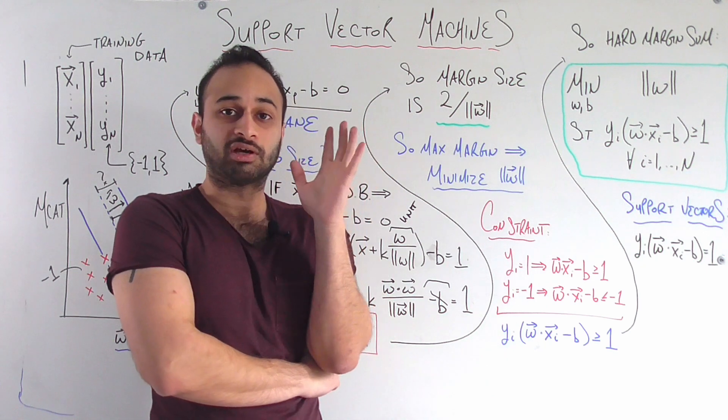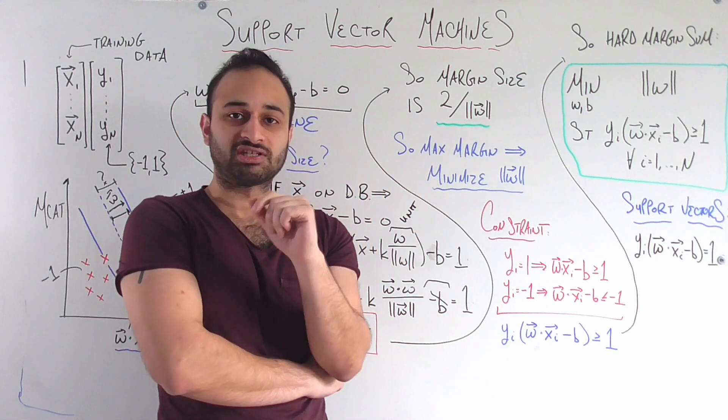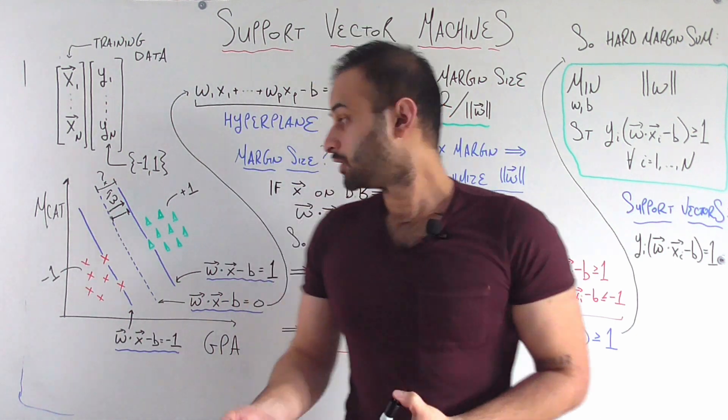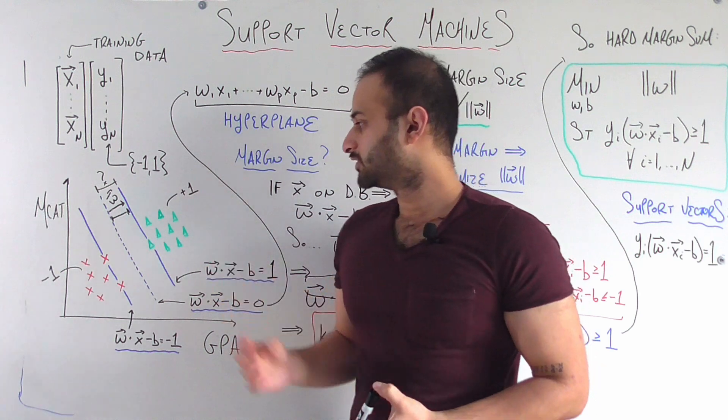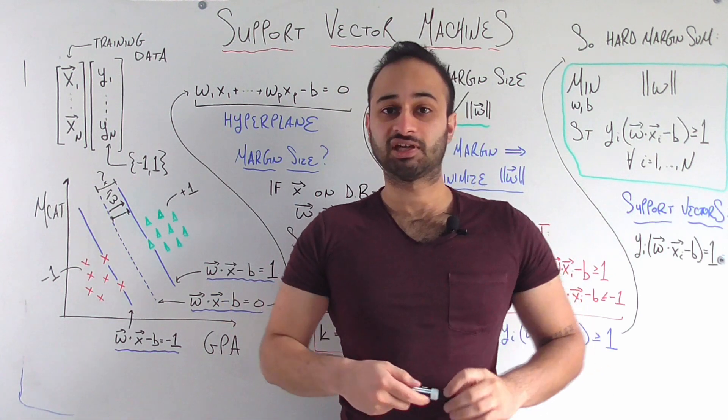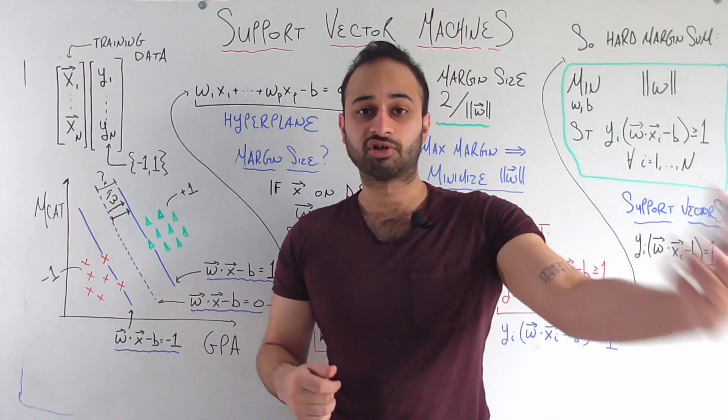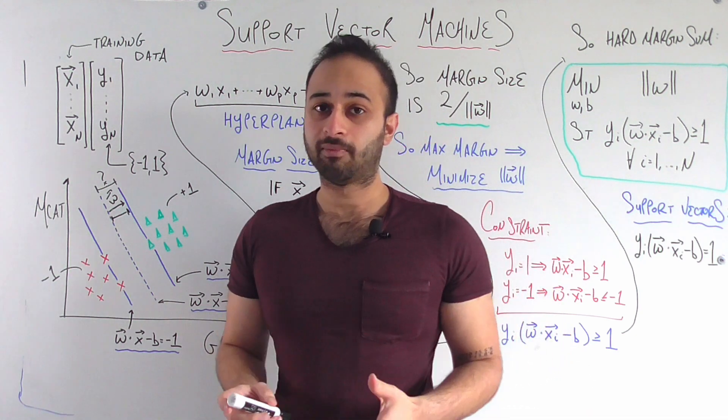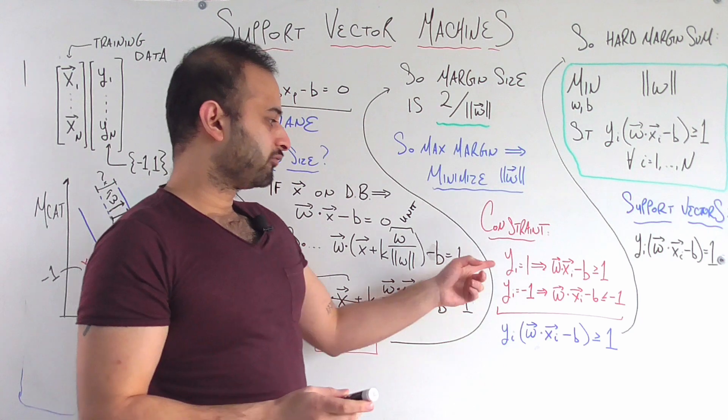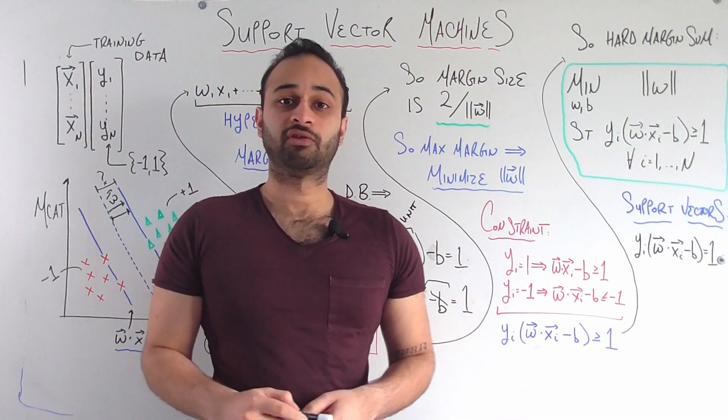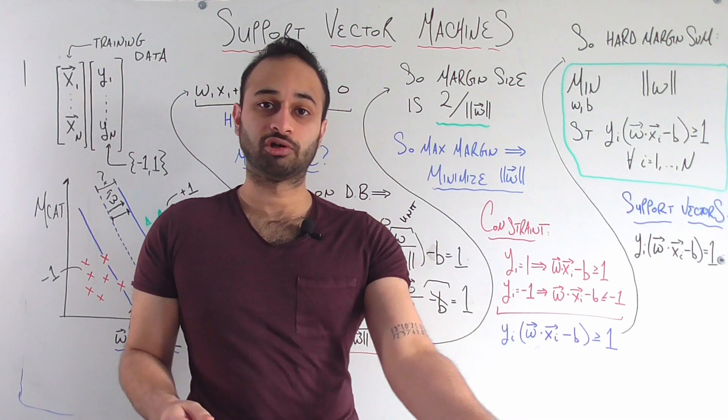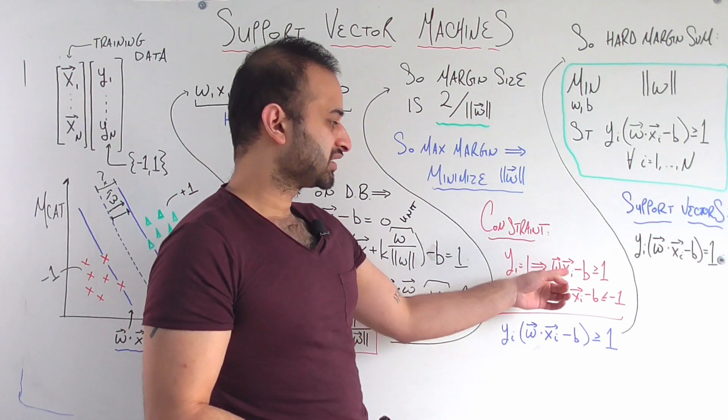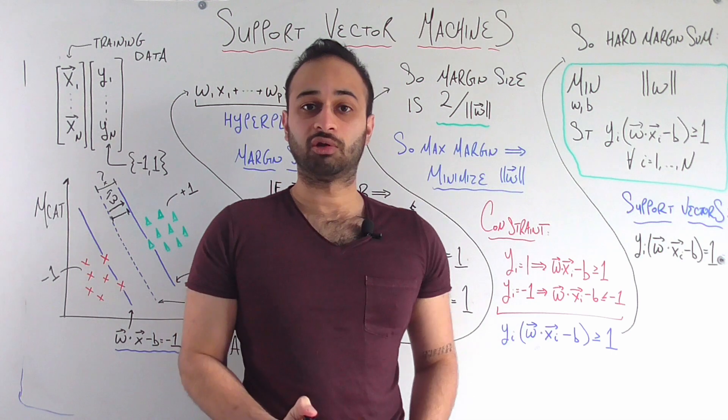But there's one constraint, or a couple of constraints that we need to take into account. We need it so that whatever w and b we choose, everything on one side of this margin is classified as a plus 1, and everything on the other side of this margin is classified as a negative 1. That means that if yi equals 1, which means that if the student does truly get into their top choice medical school, then we need that w dot xi minus b is greater than or equal to 1.